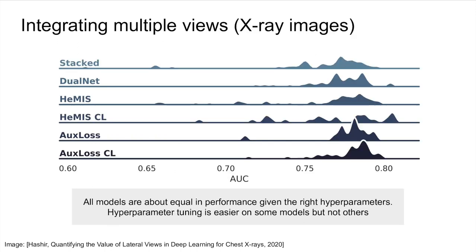These methods are generally equivalent once their hyperparameters have been tuned, but a key difference is the ease of training and finding the optimal hyperparameters. Here we see the results of a random hyperparameter search over all the methods presented. The CL here stands for curriculum learning, where the different views are sometimes presented independently with the goal of preparing the network to work while only seeing one view.